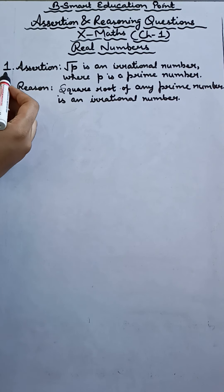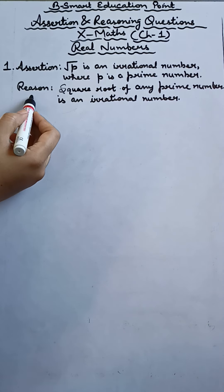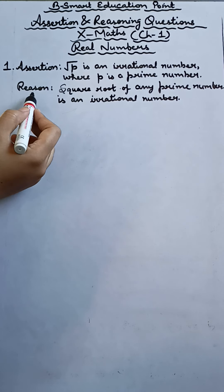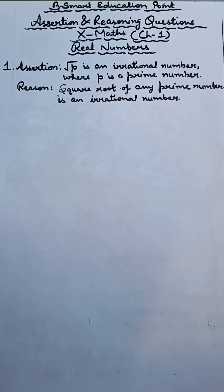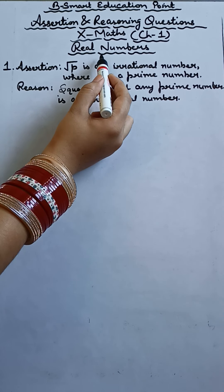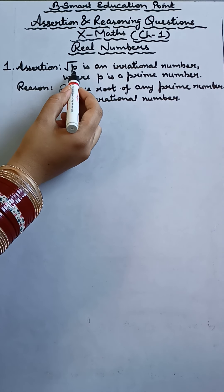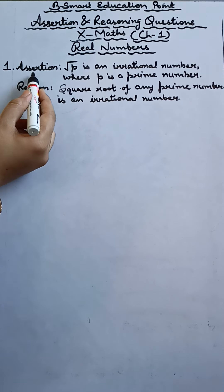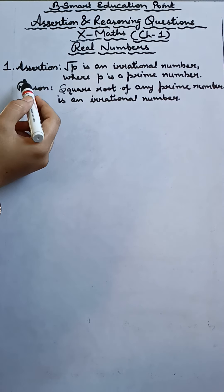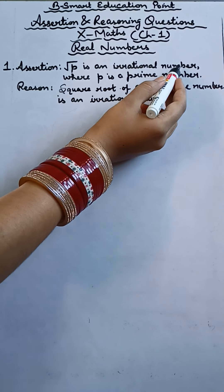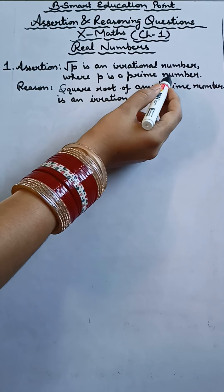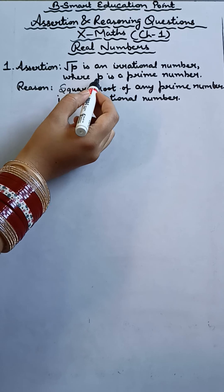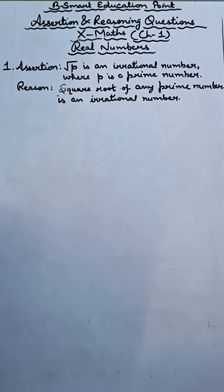This is our very first question, having assertion and reasoning. What are the basics you have to read from assertion and reason? This is based on chapter 1, real numbers. In real numbers, you had already done the topic of rational and irrational numbers. So now, what is the assertion? The statement is: root p is an irrational number, where p is a prime number. If p is a prime number, then root p is an irrational number. Is it correct or not?